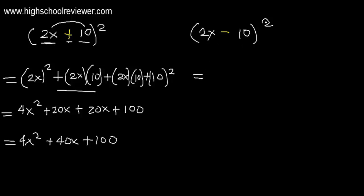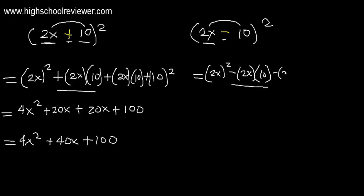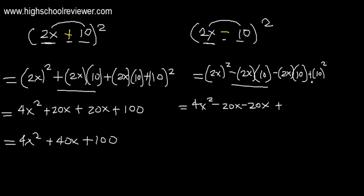For 2x minus 10 raised to the power of two: square the first term — 2x raised to the power of two — copy the negative sign, and multiply the first and second term: 2x times 10. Repeat: minus 2x times 10. Square the second term — always positive — giving plus 10 raised to the power of two. So 2x squared is 4x squared, minus 20x minus 20x is minus 40x, and 10 squared is 100. Final answer: 4x squared minus 40x plus 100.